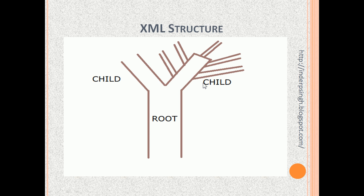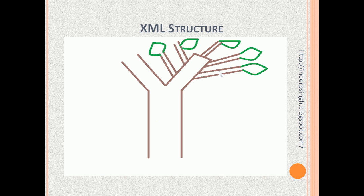A child can have multiple child elements as well — for instance, a child with five child elements. Next, we have the leaf, which shows the actual data, similar to the actual data within the XML. Any XML element, including the root, can have no leaf or exactly one leaf, meaning the root or any child can have some text data associated with it.